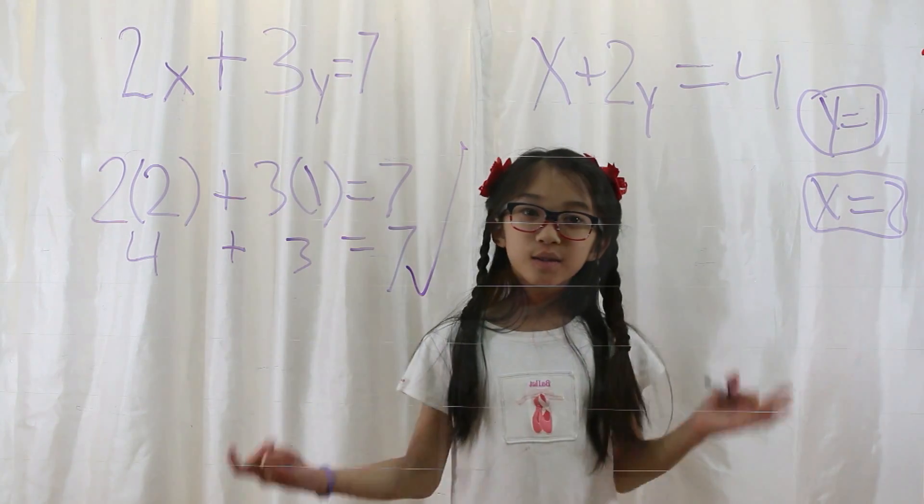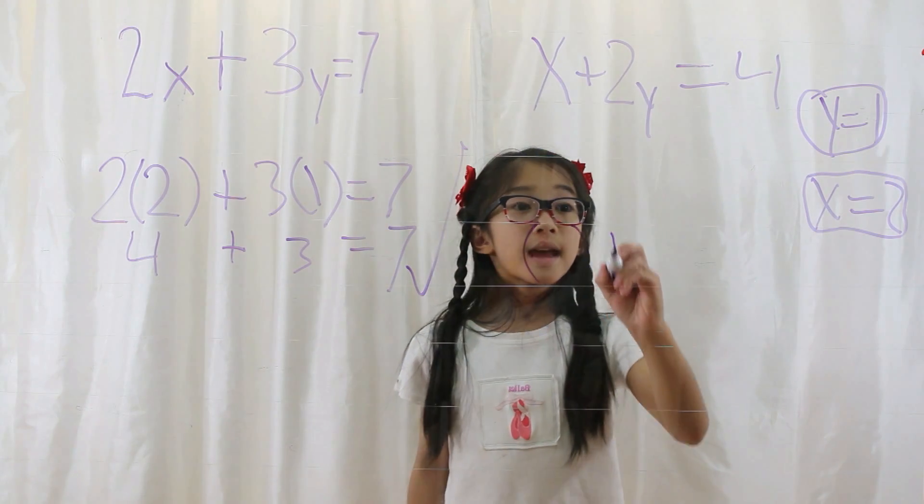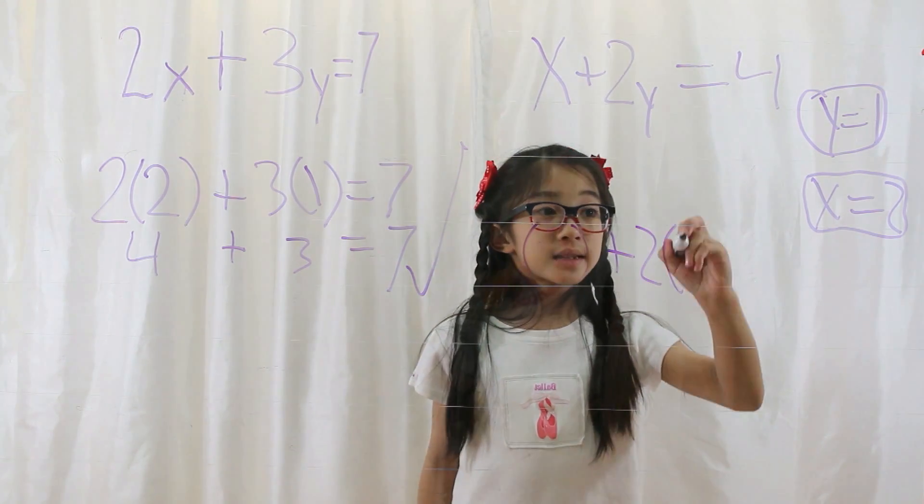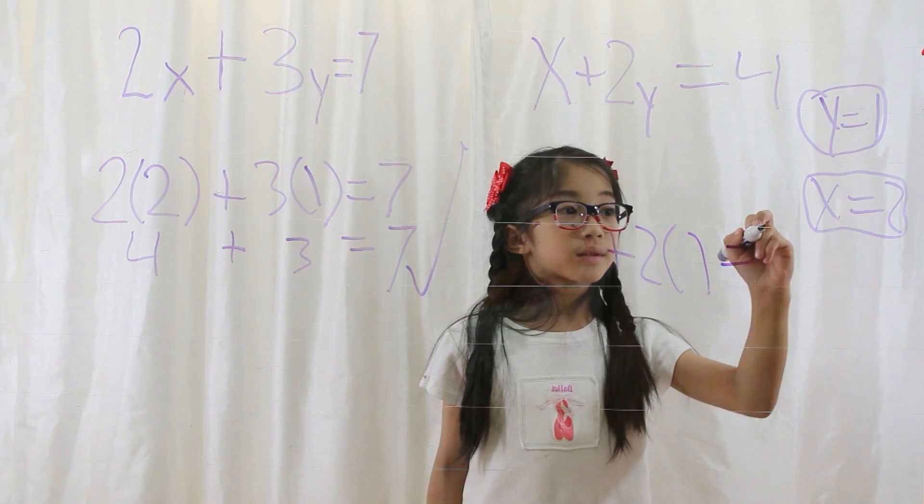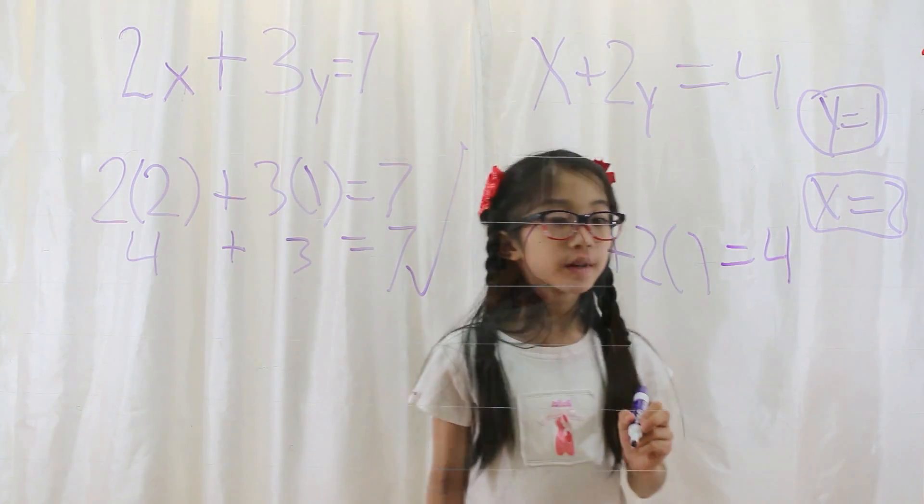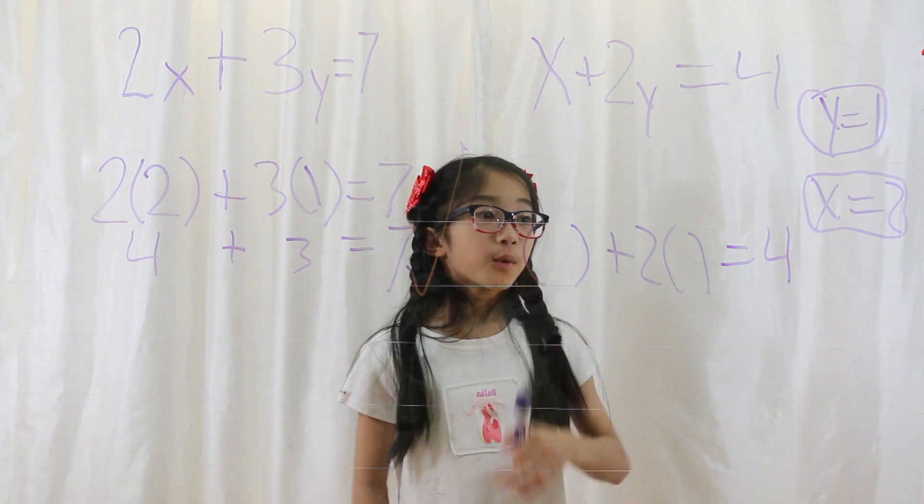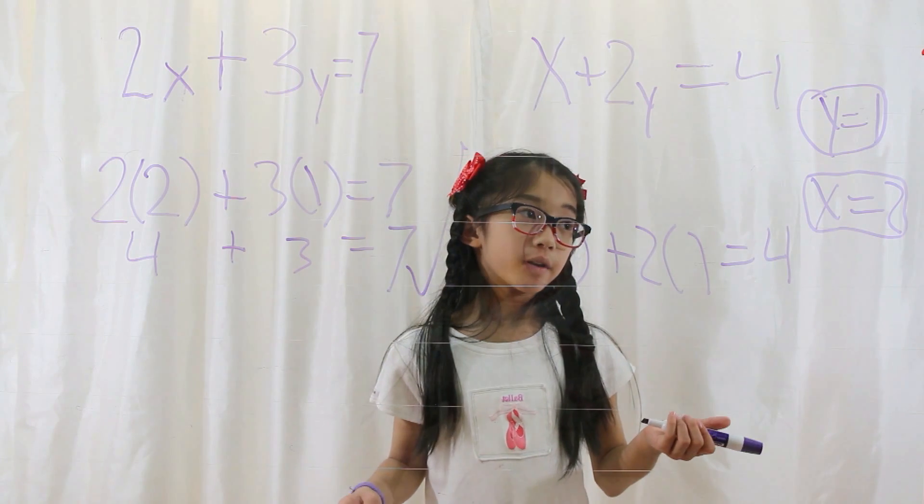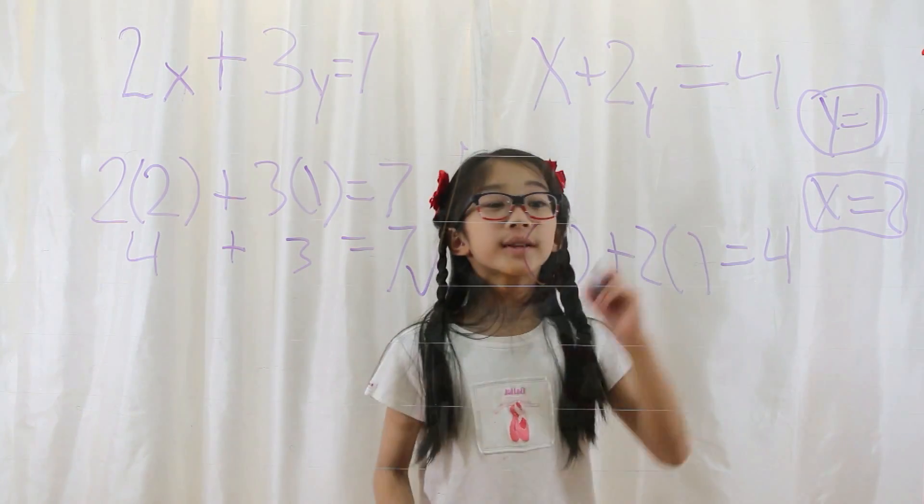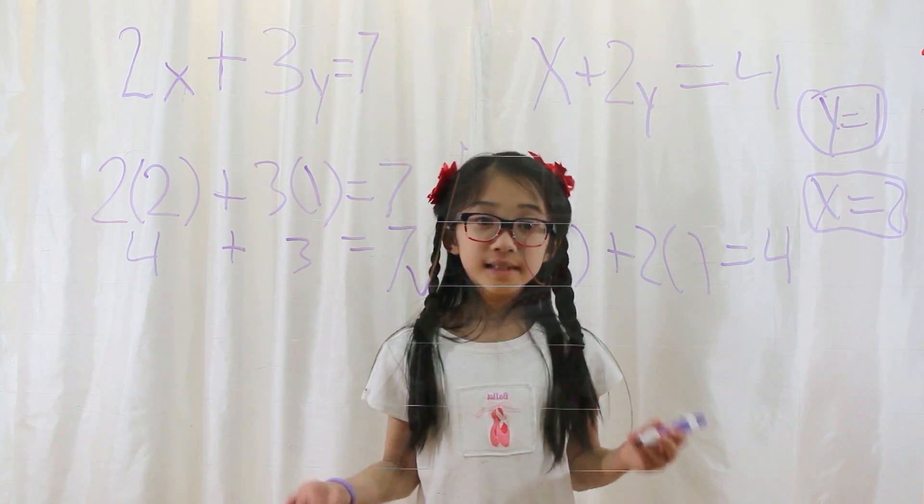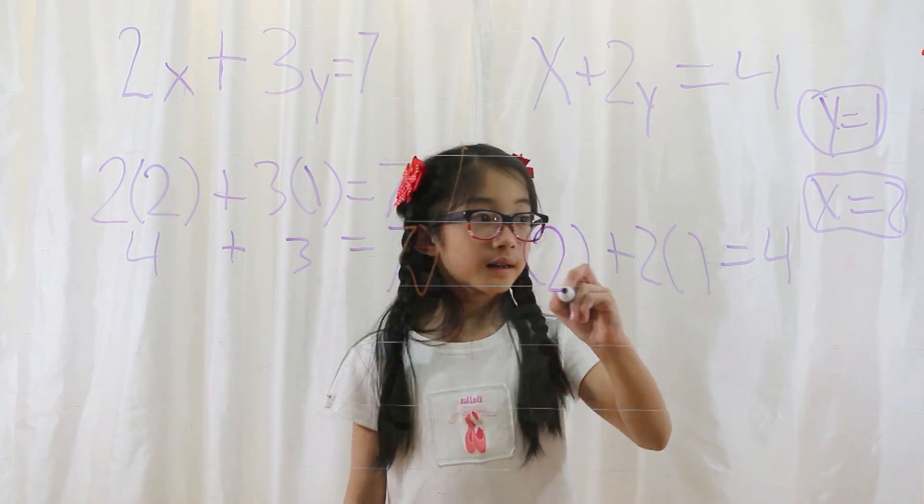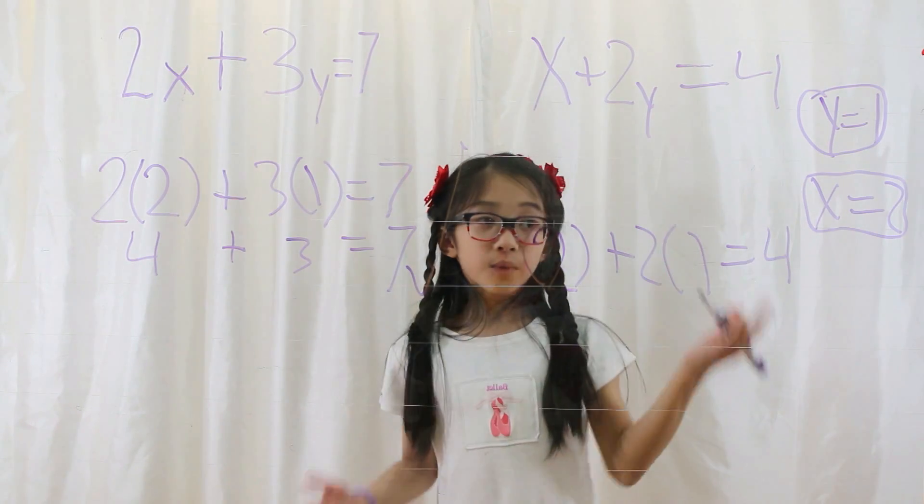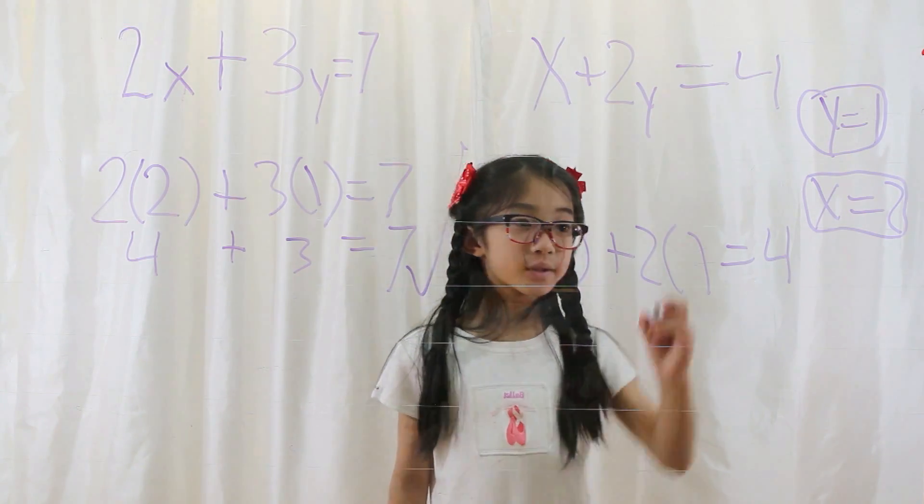Now let's see the other equation. Parentheses plus 2 parentheses equals 4. First, you plug it in. What goes in the parentheses? Well, whatever equals that variable. So 2 would go in the x parentheses, because x equals 2. And then 1 would go in the y parentheses, because y equals 1.